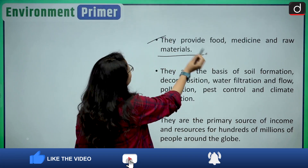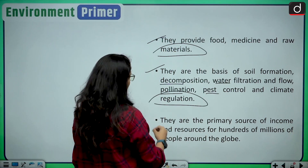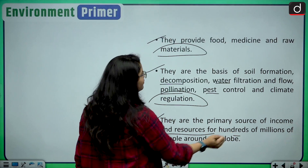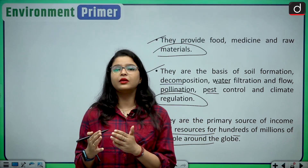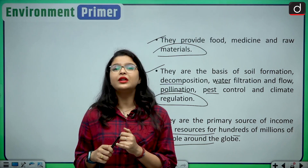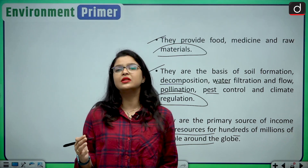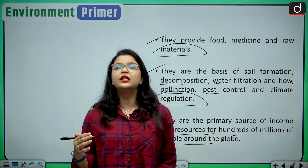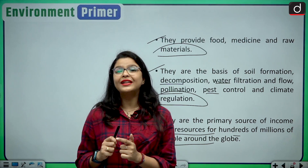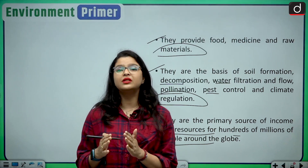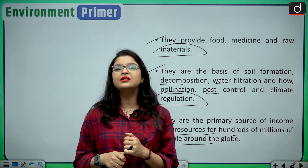Native species provide food, medicine, and raw materials. They are the basis of soil formation, decomposition, water filtration and flow, pollination, pest control, and climate regulation. They are the primary source of income and resources for hundreds of millions of people around the globe. The IUCN Red List has already mentioned that a quarter of our native species are on the brink of extinction, and we really need to accelerate positive efforts toward the mitigation of climate change and protection of native species.